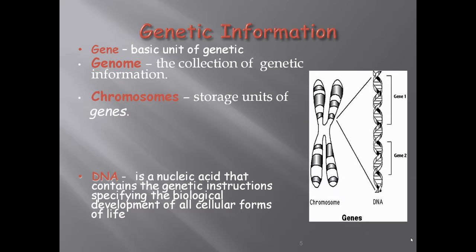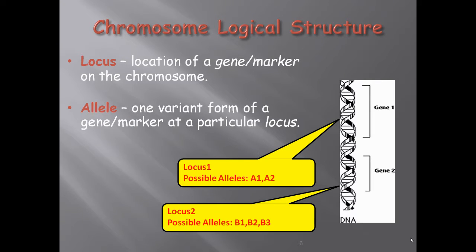Now we will see some basic definitions. A gene is the basic unit of genetics. The genome is the collection of all genetic information. Chromosomes are the storage units of genes, where genes are arranged in a particular manner. DNA is the nucleic acid that contains the genetic instructions specifying the biological development of all cellular forms of life.